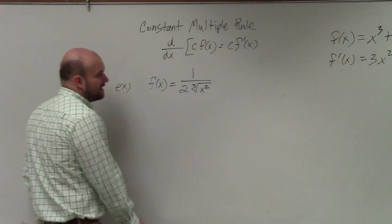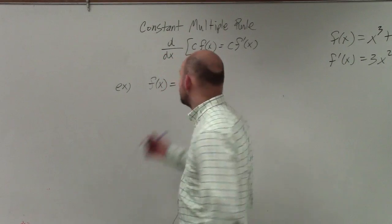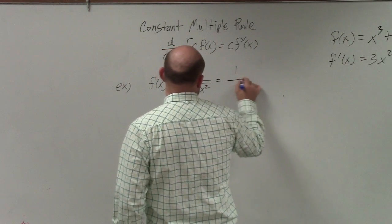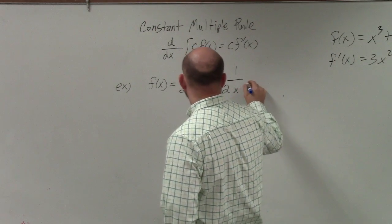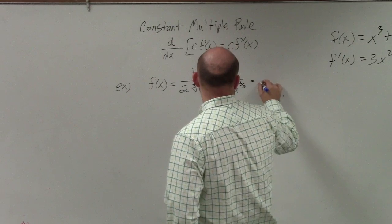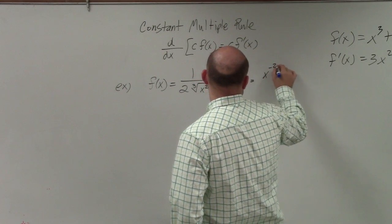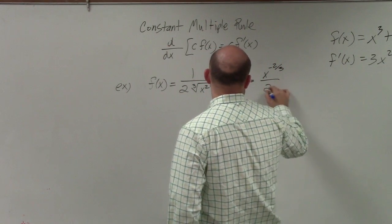All right, so in this example, I can rewrite this as 1 over 2x^(2/3), which is the same thing as x^(-2/3) over 2.